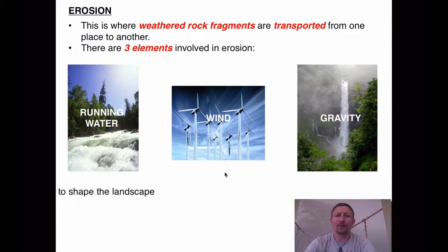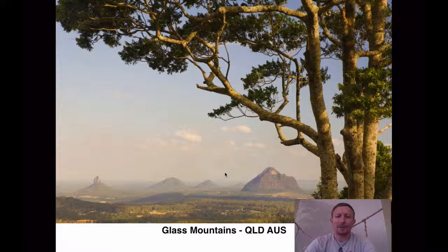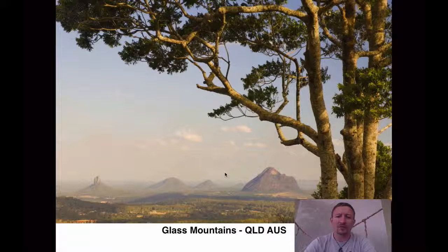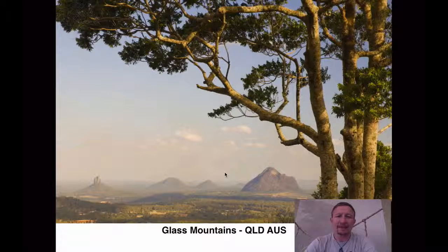These forces work together to actually shape the landscape that we know today. You can see in this picture here of the Glass Mountains in Queensland, Australia, we get these huge rocks sticking out of a sort of plateau of land. That could have been because of some uplift of the continental plates, or it could be down to the process of weathering and erosion, where the hard rocks remain and the soft rocks have been weathered away and transported elsewhere, mainly to the sea. This leaves these rocks sticking out on the landscape for us all to appreciate.